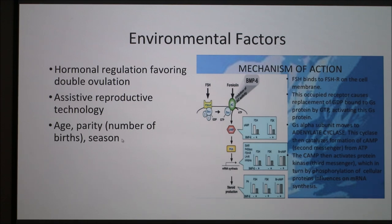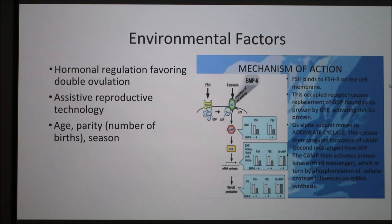It can also be affected by age and parity, which is the number of births that a cow has had, and then the season can also affect this — whether it's spring, winter, fall, or summer. This graphic goes over the mechanism of FSH and how it increases ovulation.